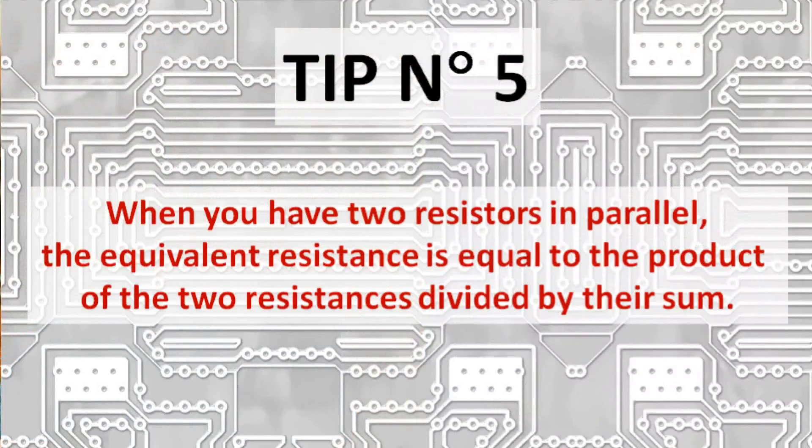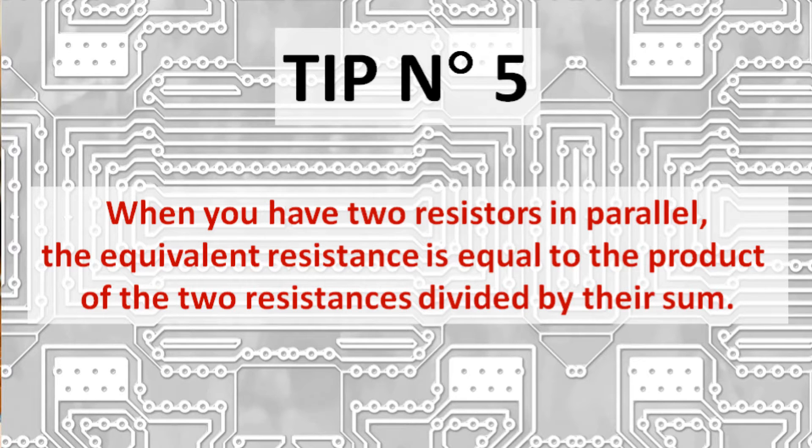Tip number five. When you have two resistors in parallel, the equivalent resistor is equal to the product of the two resistors divided by their sum.